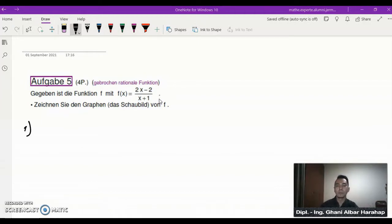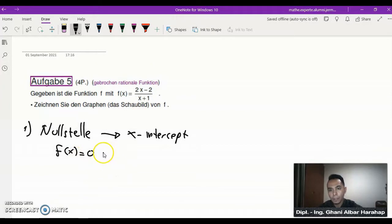We need to extract information we need to sketch, and the easiest one is the so-called nullstelle, the point where the function intercepts the x-axis, so it's the x-intercept. What you need to do is just set your f(x) equal to zero. It means the whole expression here is equal to zero, so 0 = 2x - 2, and x is equal to 1.